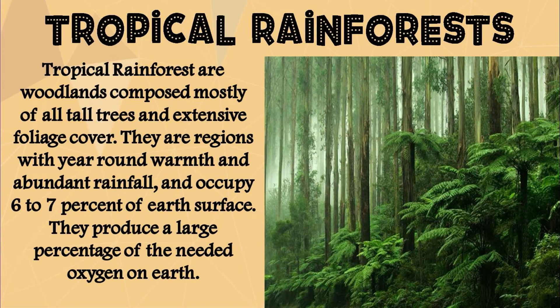Tropical rainforests are woodlands composed mostly of tall trees and extensive foliage cover. They are regions with year-round warmth and abundant rainfall, and occupy 6 to 7 percent of Earth's surface. They produce a large percentage of the needed oxygen on Earth.